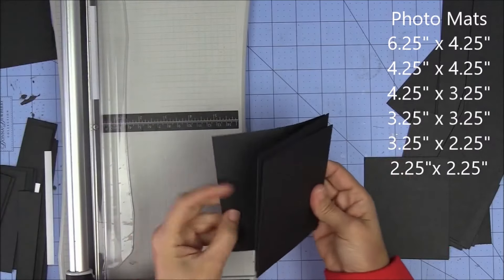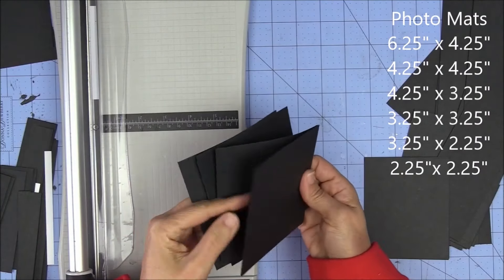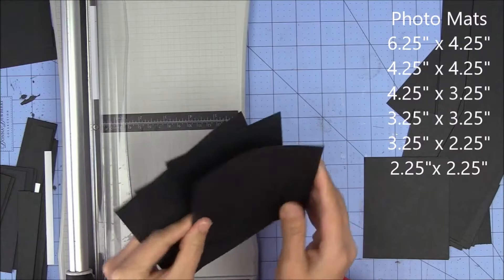So 4 and a quarter by 4 and a quarter. This is perfect for 4 by 4 pictures. Alright, so out of this stack I got 1, 2, 3, 4, 5, 6, 7.